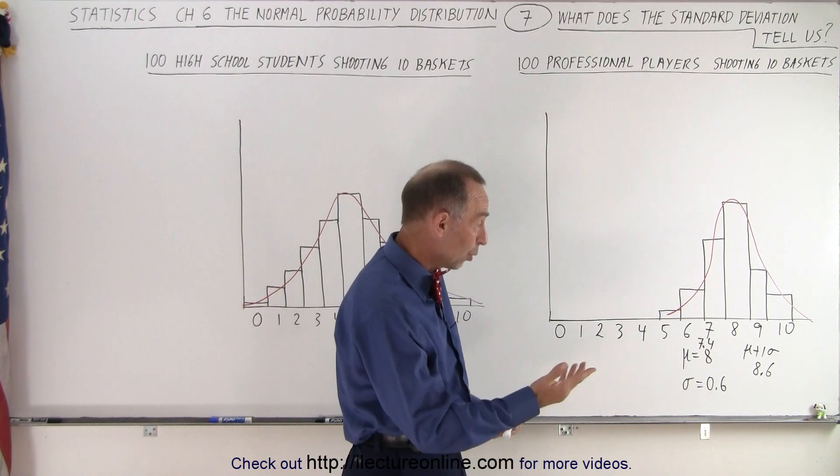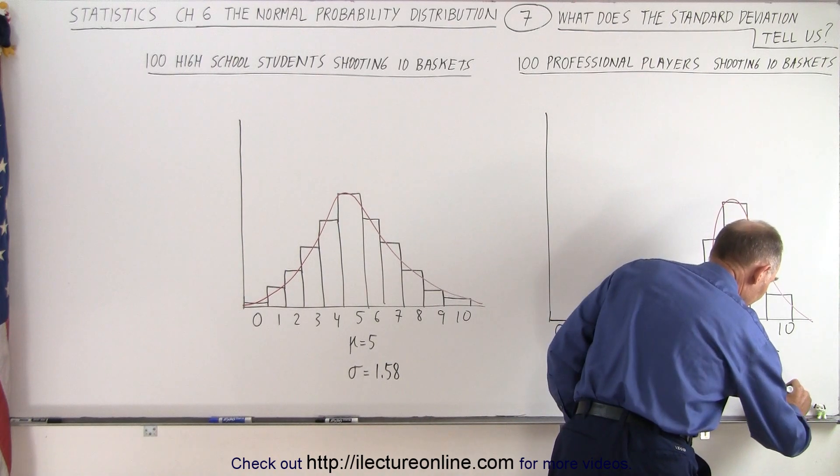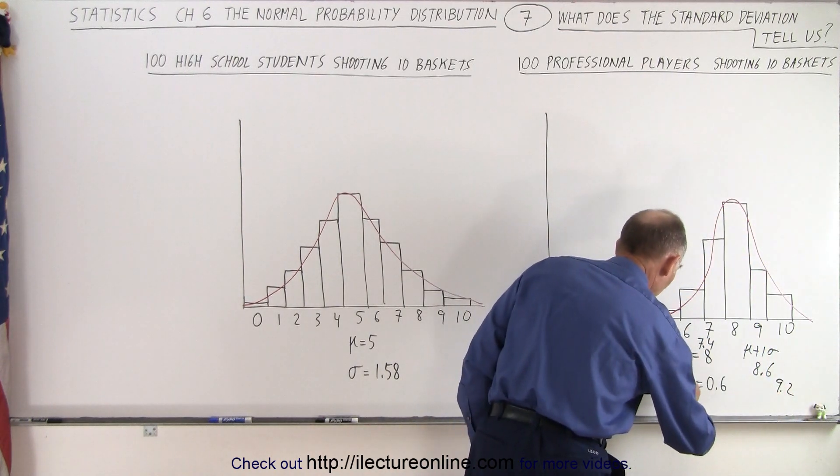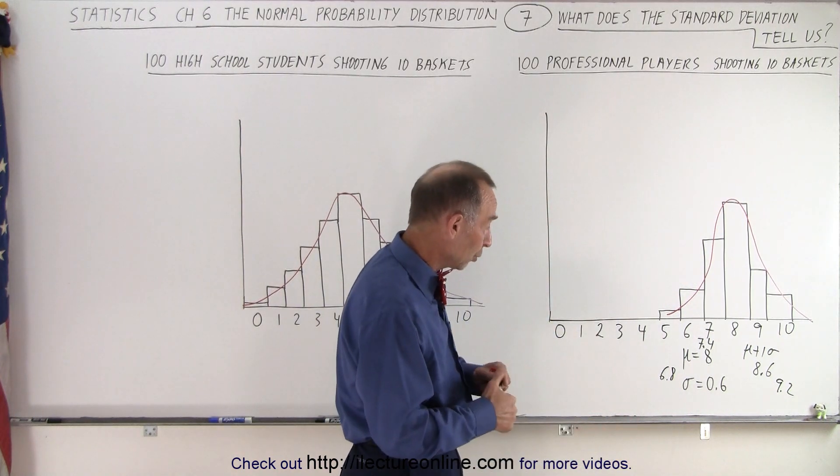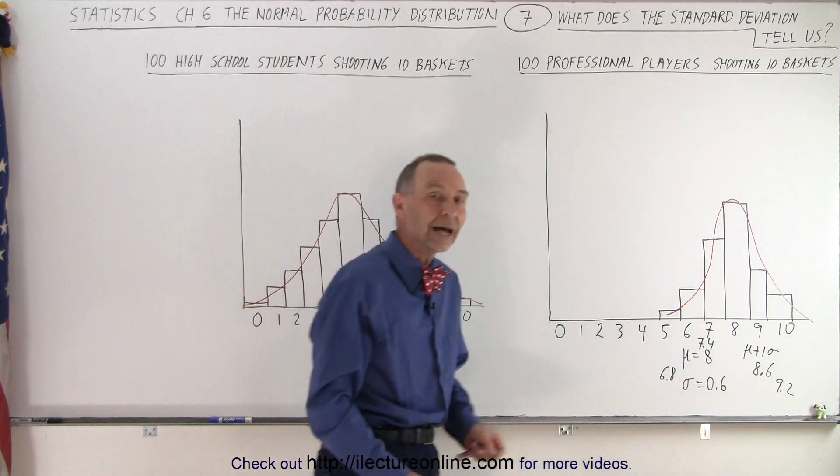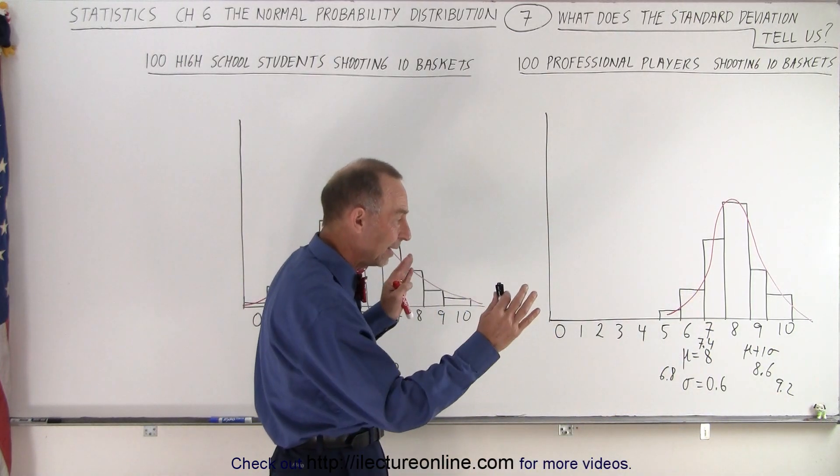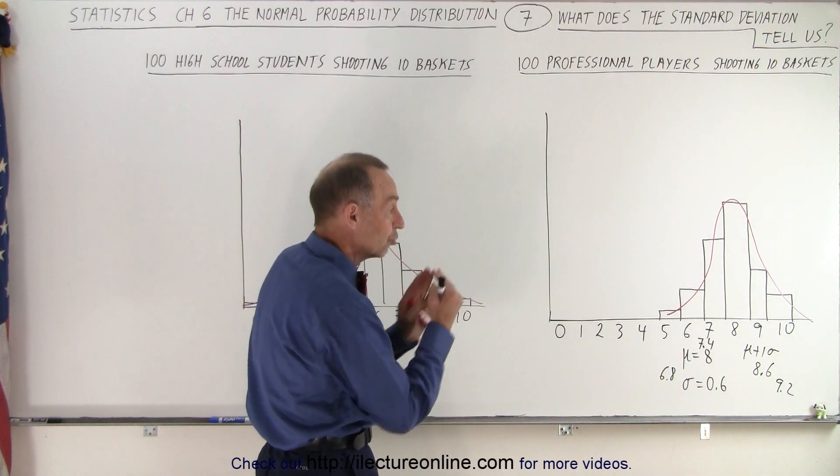If we then go one more, plus two sigma, that gives us 9.2 on one end and 6.8 on the other end. You can see that about 95 percent of all the players would shoot probably at least 7 baskets and a little bit more than 9 baskets. So you can see again a small standard deviation simply indicates a very narrow range.